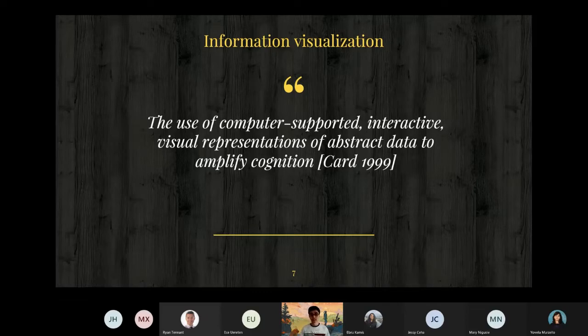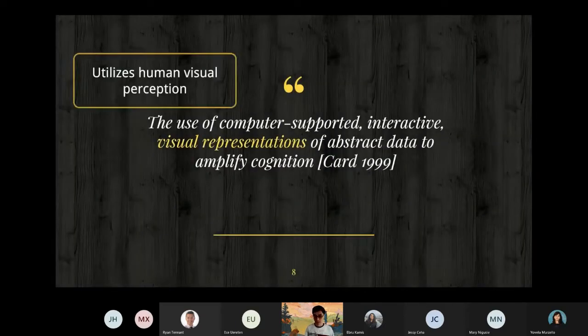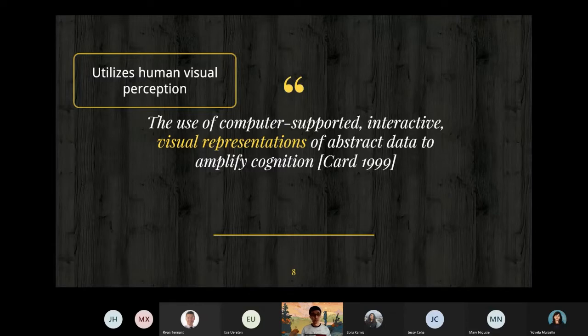What are the characteristics of InfoVis? The first key point is visual representation. InfoVis utilizes human visual perception because the visual channel is the human sense that has the highest bandwidth compared to hearing, taste, and touch. InfoVis uses visual representations to leverage human visual perception.